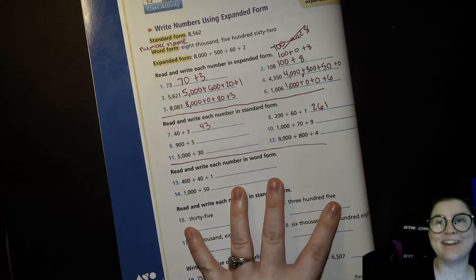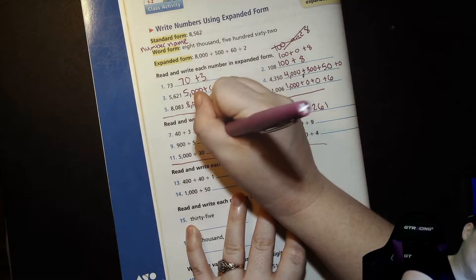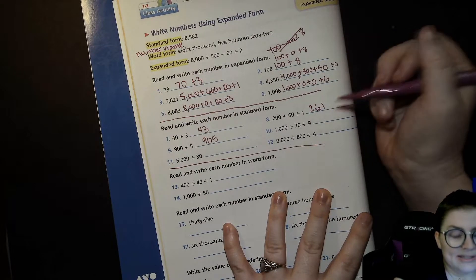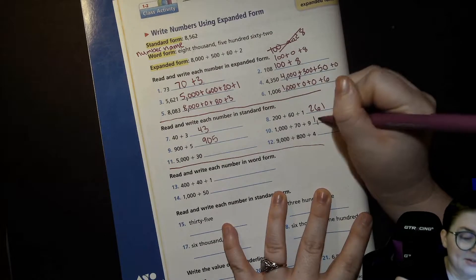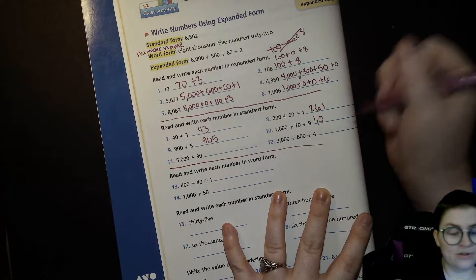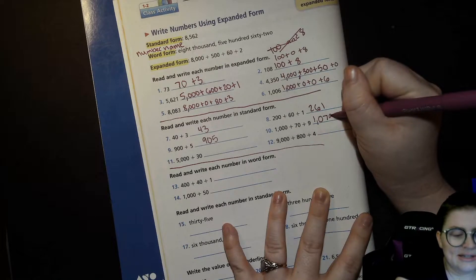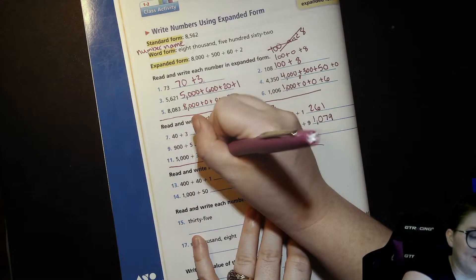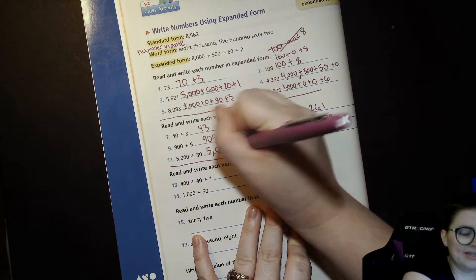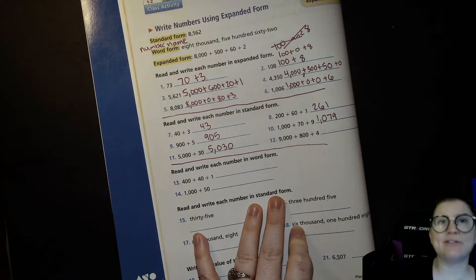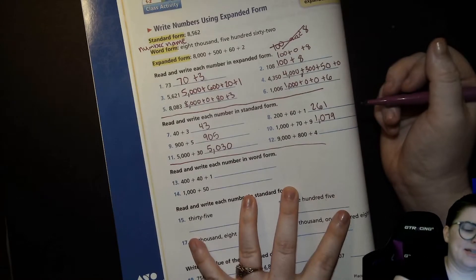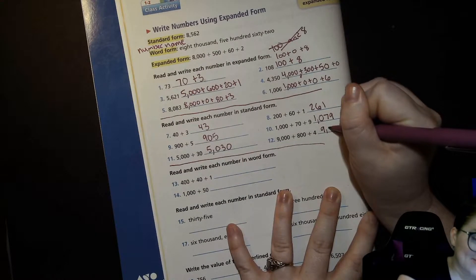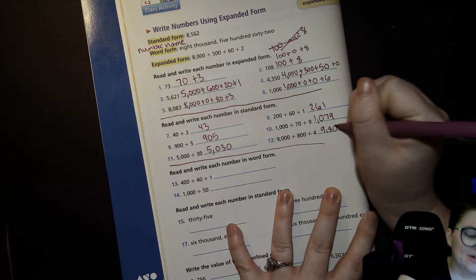And then hit play when you're ready. 905. 100 plus 5. 1,000 plus 70 plus 9, so 1,000, zero in the hundreds place because there's no hundreds, 79. 5,000 plus 30, so 5,000, zero hundreds, 3 tens, zero ones: 5,030.